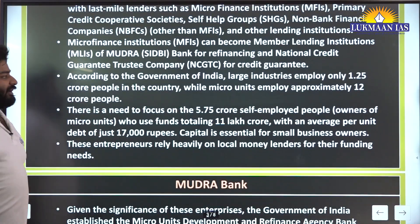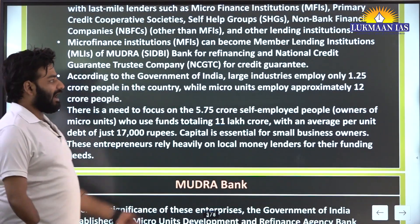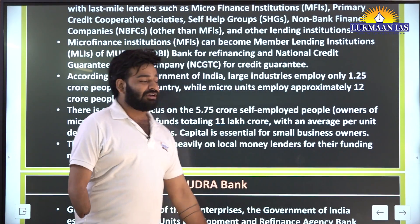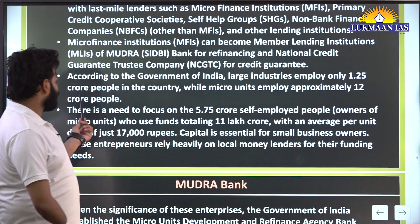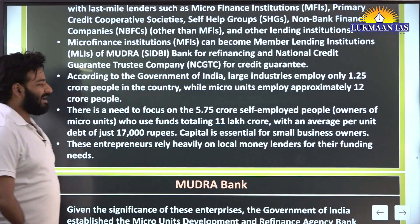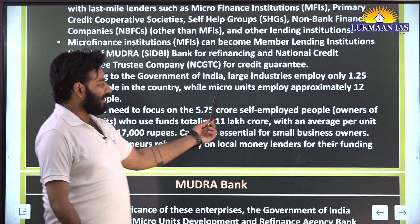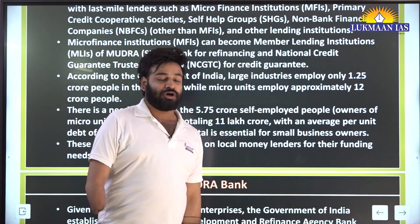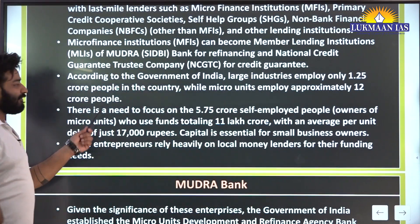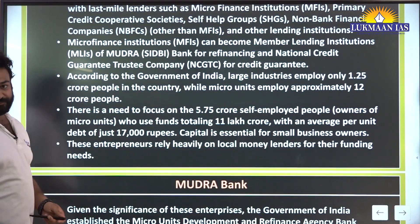According to the Government of India, large industries employ only 1.25 crore people in the country, whereas the micro units employ approximately 12 crore people.